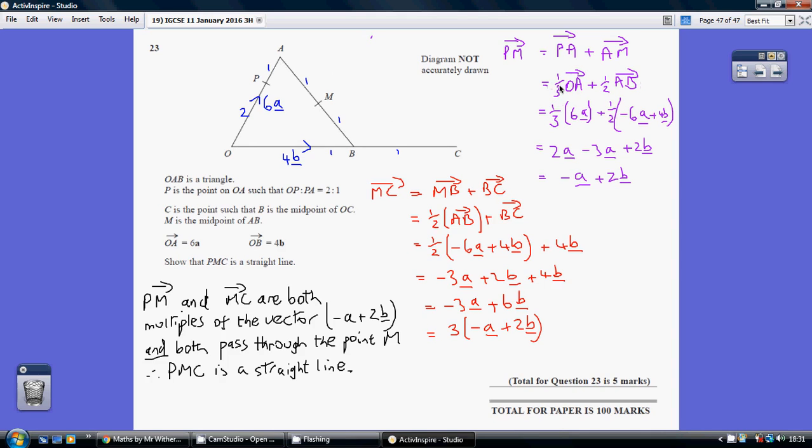We can then move over to the alternative notation, the lowercase vector notation. We know that OA is 6A, 6 lowercase a and we know that AB is minus 6A plus 4B. So, we then multiply out those two, gather-like terms and we get PM being minus A plus 2B. So, we just bank that for now and we go and have a look at the vector MC.